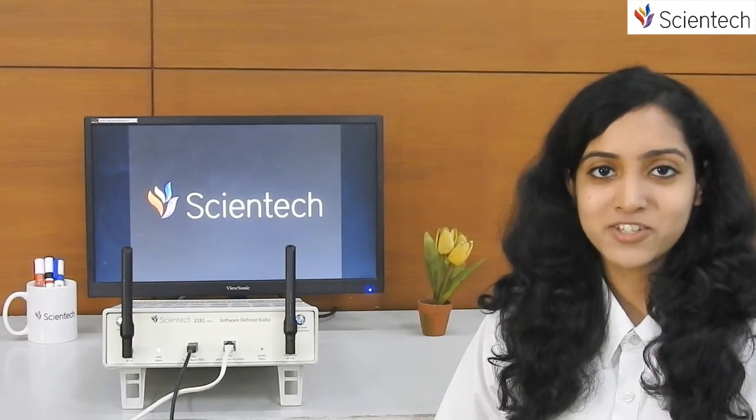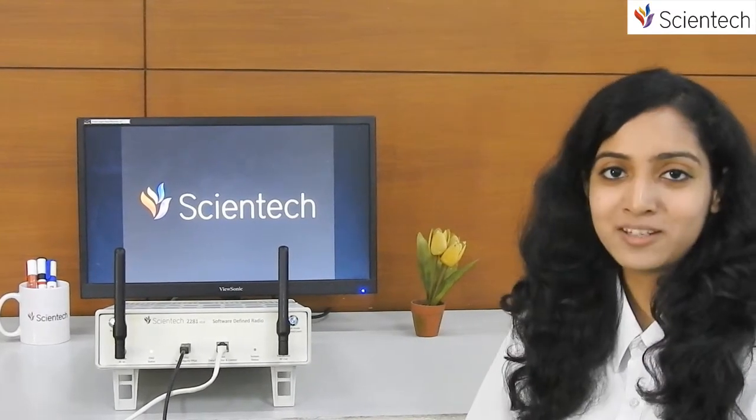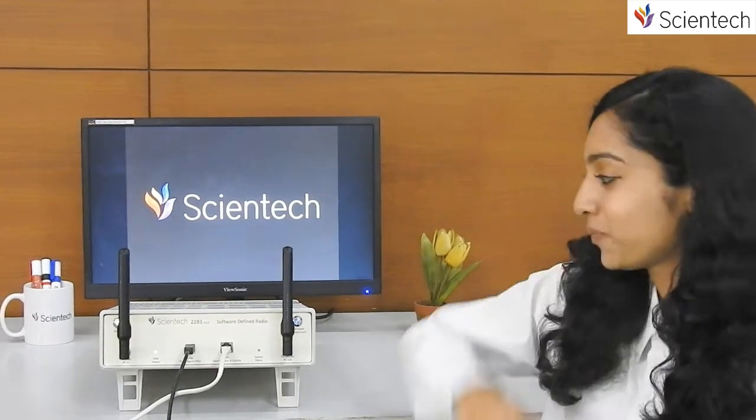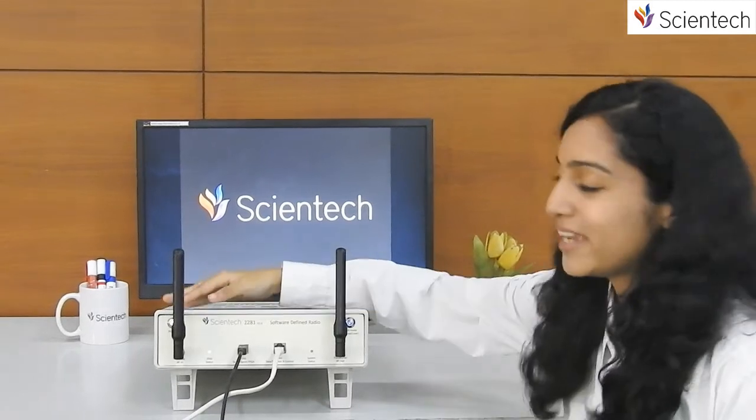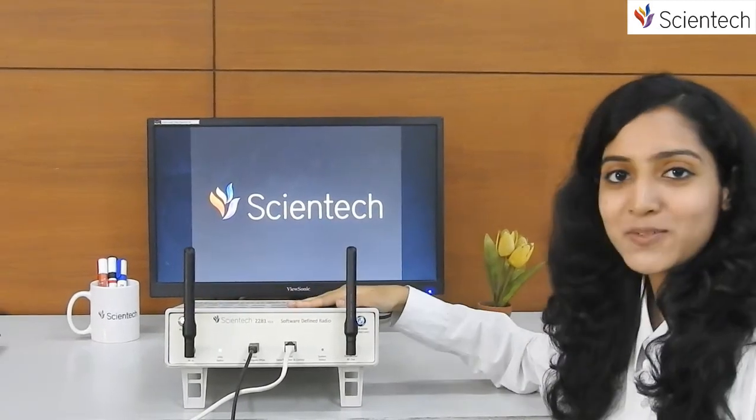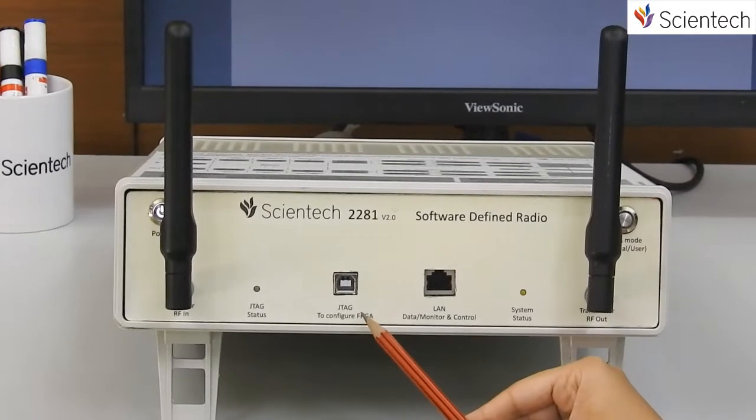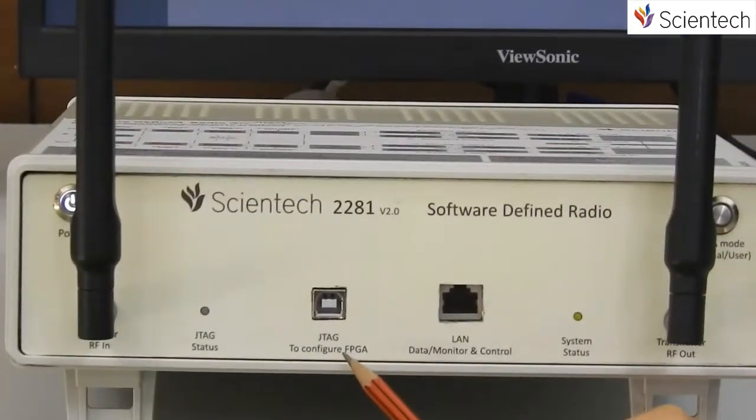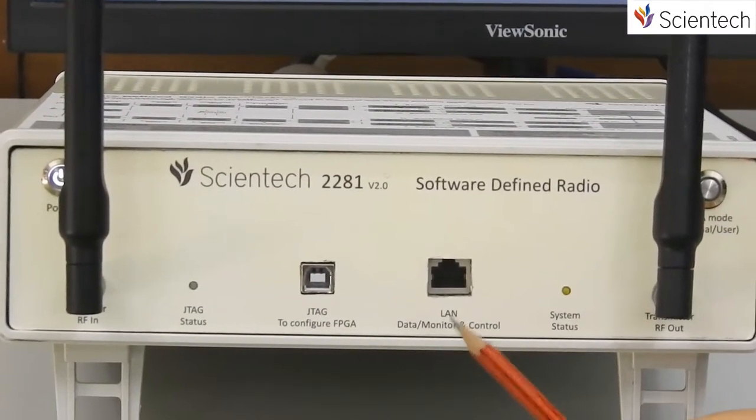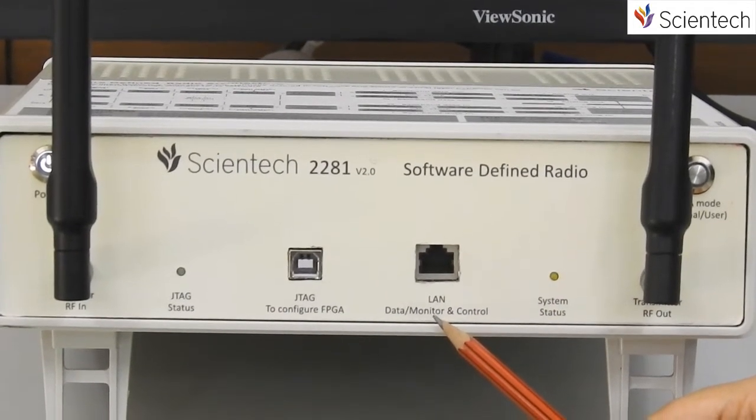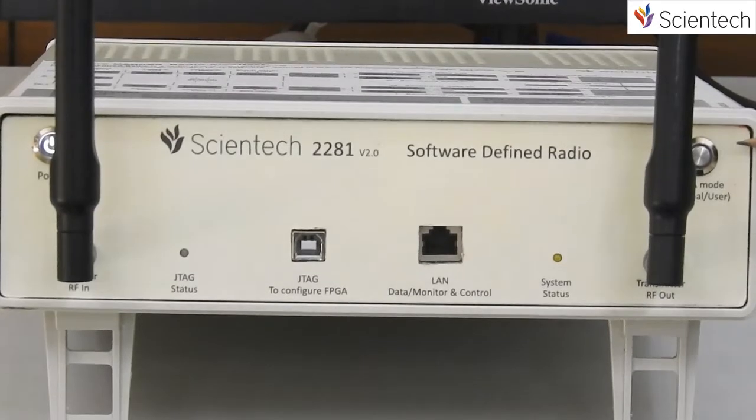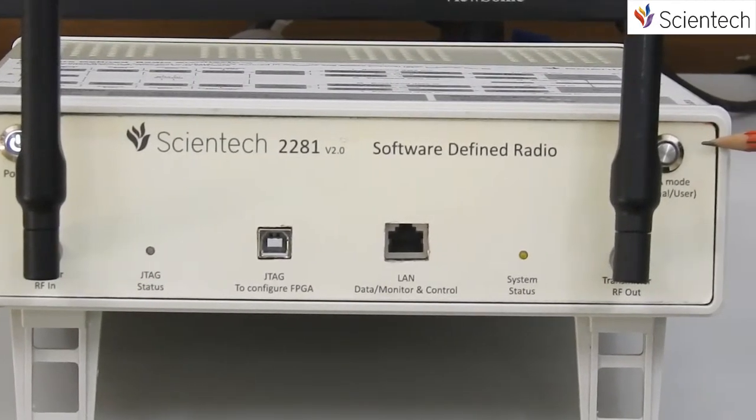System architecture of Scientech 2281 version 2.0: here we have an SDR transmitter along with an SDR receiver in one housing for more ease. This is a JTAG port which is used to configure FPGA. This is the LAN port which is used for data monitoring and control, and this is a push button which is used to switch between internal and user mode.